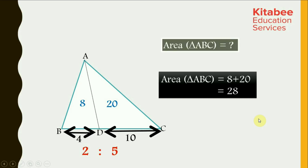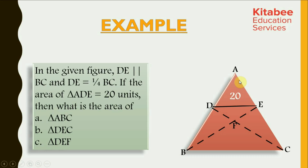The areas of two triangles are divided in the same ratio in which bases are divided, given that their heights are the same. Let us solve one more example. It is given that in the given figure, DE is parallel to BC, and DE is equal to one fourth of BC.